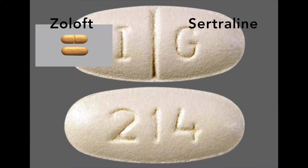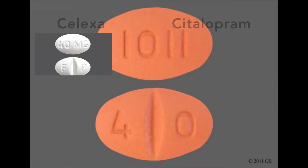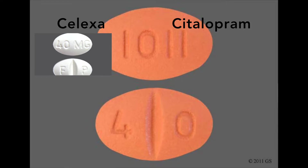Zoloft is very popular, and sertraline is its generic version. Along with helping with depression, it can also be prescribed for OCD, panic disorder, PTSD, or PMDD — premenstrual dysphoric disorder. Citalopram is generic for Celexa, and this also helps with depression. It's an SSRI — serotonin reuptake inhibitor — which alleviates depression by affecting your body's level of serotonin, a chemical in the brain.